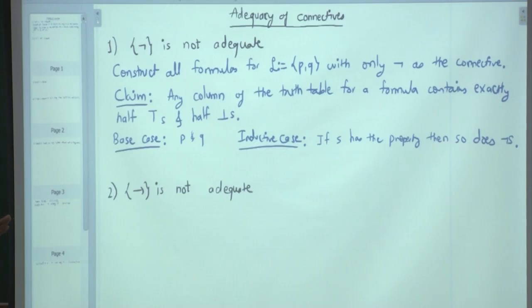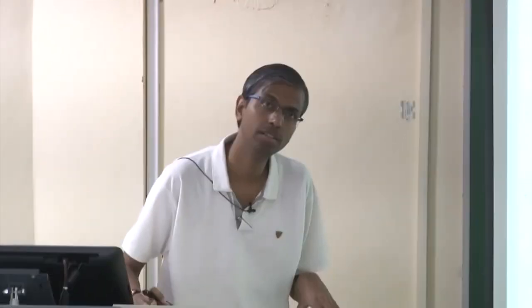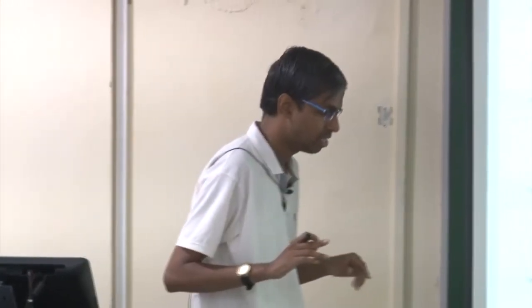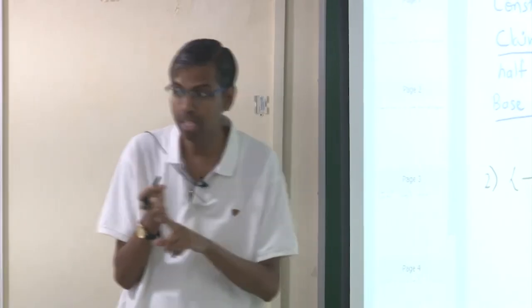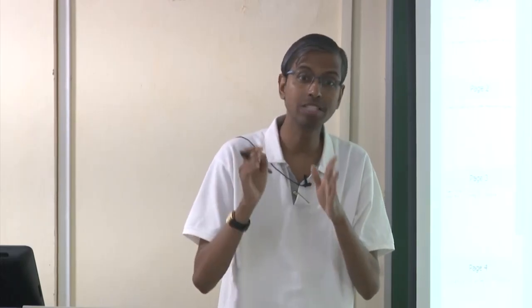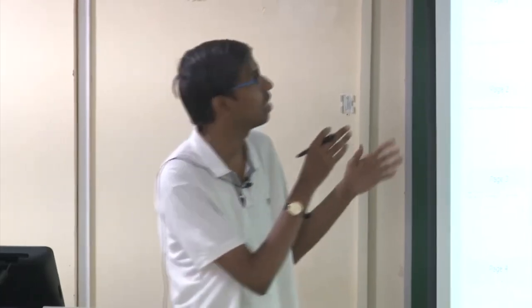A student asks about using cardinality. The instructor responds: we do not want to go there because we have not defined valuations properly. Unless you define valuation, you cannot. We are using the column for truth table because the truth function is given — negation's truth function is given. We are not trying to do semantics here, we are trying to do more syntax. Syntax corresponds to only this.